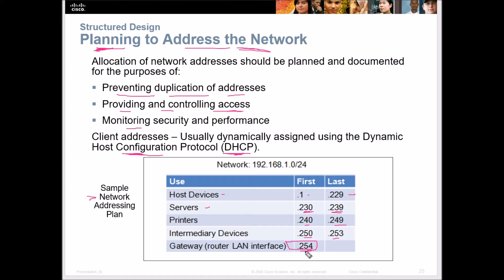They used the high end for the gateway. Some security people say don't make your gateway the .1 because it makes it easier for hackers to guess. My counter-argument is that if someone can sniff your traffic, they'll easily see the gateway IP address anyway — so it really doesn't matter if it's .1 or .254. Someone just scanning or guessing your scheme might be thrown off slightly, but I always make my gateway LAN interface the .1 so I know it's always there.